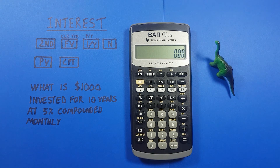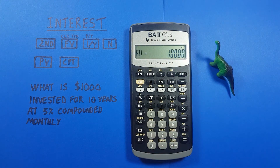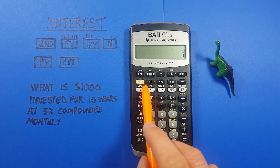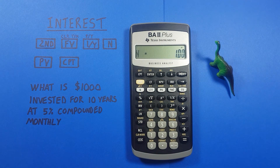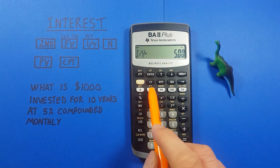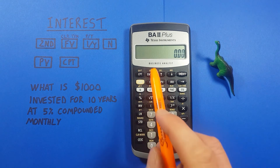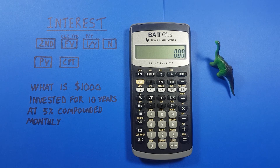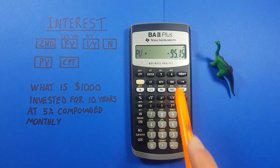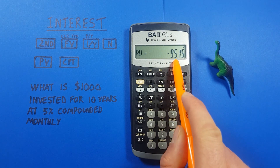Let's look at another example. First we'll clear our data with Second Clear. For this example, what if we ended up with $100 as our future value, and it had been invested for one year at an interest rate of 5% compounding quarterly? We set C/Y to 4 for quarterly. Now we compute and we can see what our present value or initial investment was — we initially invested $95.15 to end up with that $100.